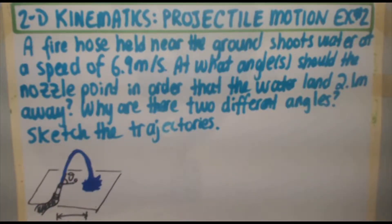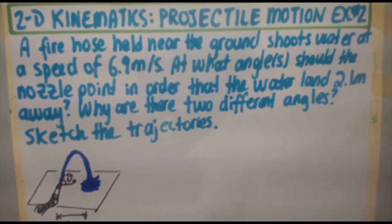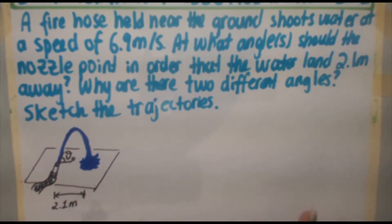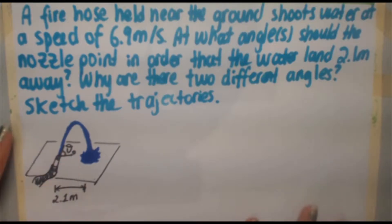Welcome back to another projectile motion problem, example 2. A fire hose held near the ground shoots water at a speed of 6.9 meters per second. At what angle or angles should the nozzle point in order that the water land 2.1 meters away? Why are there two different angles and sketch the trajectories? The water goes up and down in parabolic motion with a horizontal range of 2.1 meters, and we need to find the launch angle.